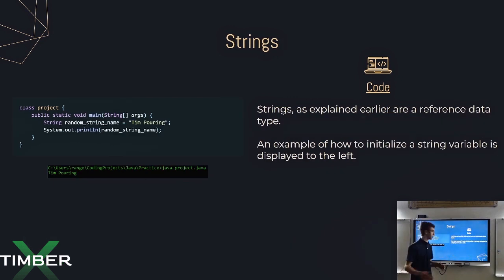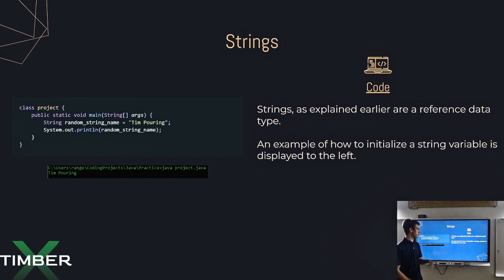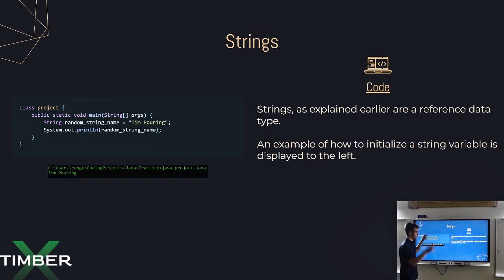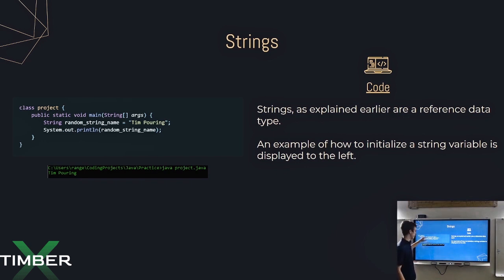So how about strings? This is one of the reference data types we talked about. Strings are a reference data type, and an example of how to initialize a string variable is displayed to the left. Earlier we just did System.out.println and then quotations with the string inside. But this is actually how you make a variable by itself and then print that variable — and it does the same thing if we replace the variable name with its value.